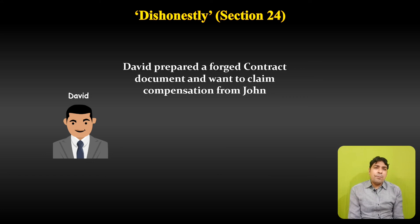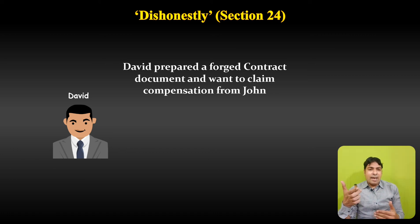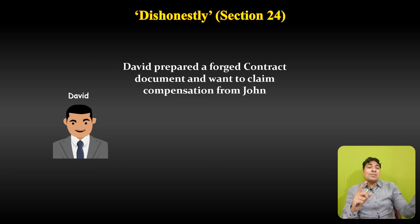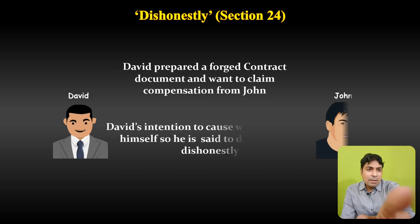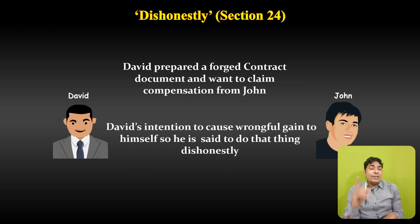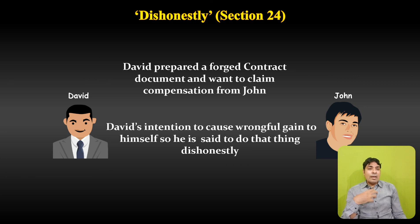There is an example: David prepared a forged contract document and wanted to claim compensation from John. So what David did here was prepare a fake/forged contract and through that contract, he wanted to claim compensation from John. David's intention was to cause wrongful gain to himself, so he is said to have done that thing dishonestly. David's intention was wrongful gain for himself.